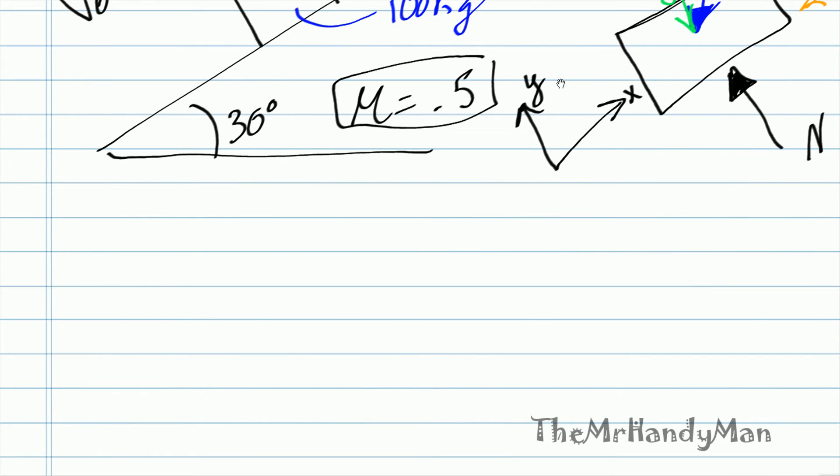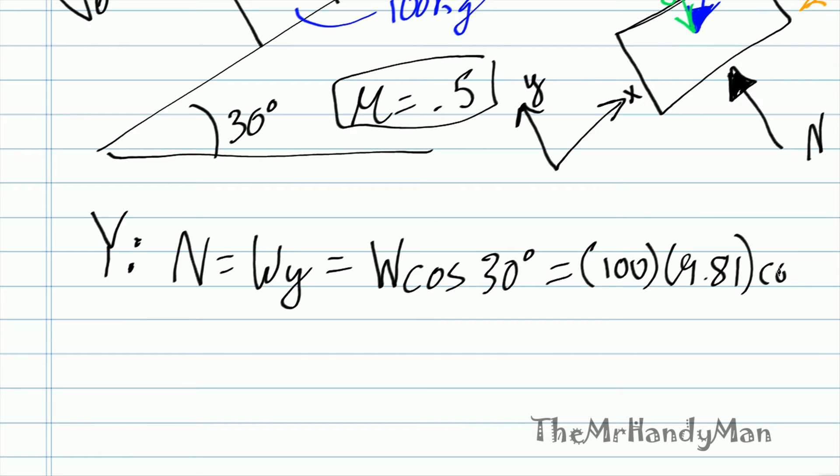Just to kind of list them all out here, what's going to be in the y direction? That would be the normal will equal wy, which we actually already know this to be w cosine of 30 degrees. And that's just based off the incline. Well, we know that w is equal to mass times acceleration, or mass times gravity.